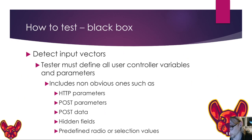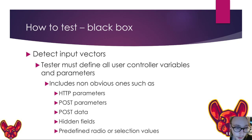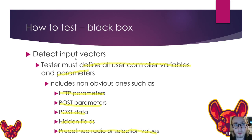We're going to test in several ways. Black box testing means you don't have access to any source code — you're going in blind and you're going to test a lot. You really have to detect every single input vector, and it's really important that you take good notes. Note down every single one because you'll easily forget one, and that doesn't look good on a professional pentest or as a bug bounty hunter. We're going to define all user-controlled variables and parameters, including non-obvious ones such as HTTP parameters, POST parameters, POST data, hidden fields, predefined radio buttons, and selection values — all possibilities for reflected XSS.